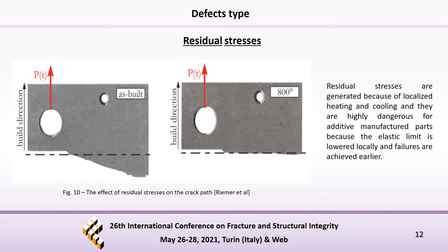Residual stresses are another type of defect. In AM processes, the high thermal gradient cannot be avoided completely, so residual stresses are generated because of localized heating and cooling, and they are highly dangerous because the elastic limit is lowered locally and failures are achieved early. Some authors found that in as-built conditions, where the residual stresses are high, components show low and insufficient crack growth. This makes it clear that heat treatments are necessary: after an 800-degree heat treatment, the crack growth is greater and the crack path is more linear.